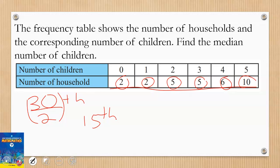My median will be on the 15th position. So I'll start numbering from here or adding from here: 2 plus 2 is 4, plus 5 is 9, plus 5 again will give me 14. I've not gotten there yet. 14 plus 6 is now 20. So it means that my 15th position is here. If it is here, the median mark is going to be 4. So the median number of children is 4. I hope it makes sense.